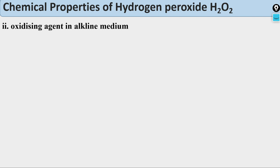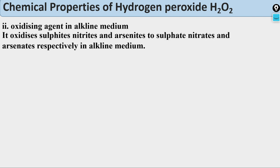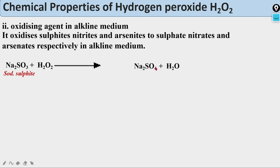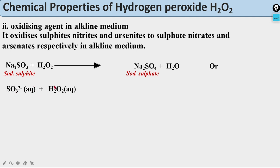As an oxidizing agent in alkaline media: H₂O₂ oxidizes sulfites, nitrites, and arsenites to sulfates, nitrates, and arsenates respectively. For example, Na₂SO₃ + H₂O₂ → Na₂SO₄ + H₂O. The ionic equation: SO₃²⁻(aq) + H₂O₂ → SO₄²⁻(aq) + H₂O. This is the oxidation of sulfite to sulfate by hydrogen peroxide in alkaline medium.